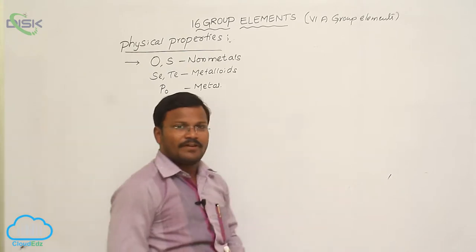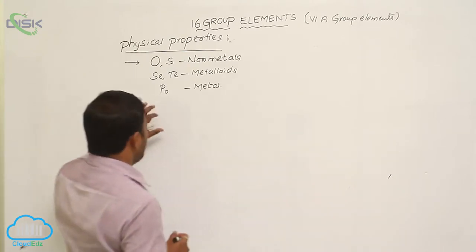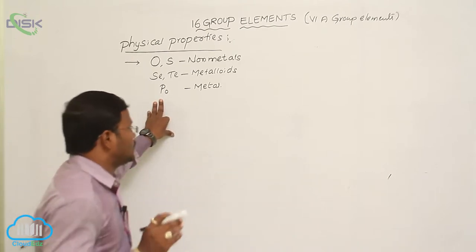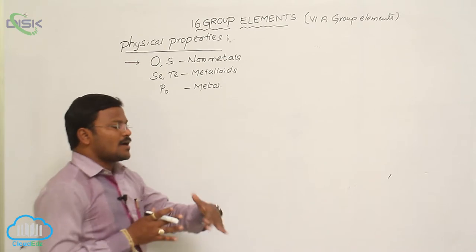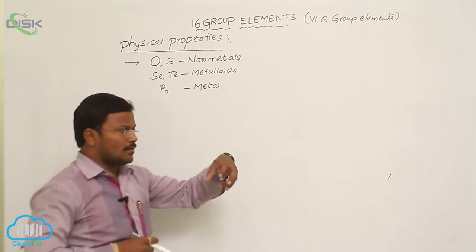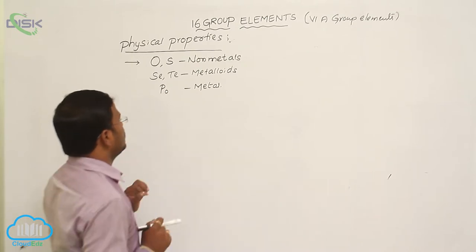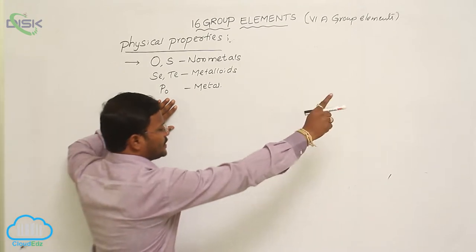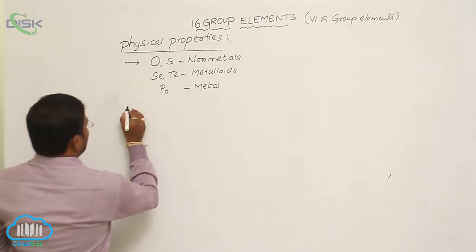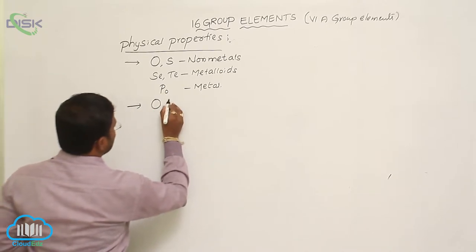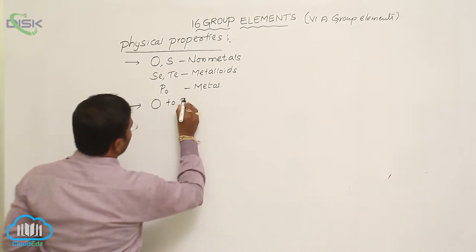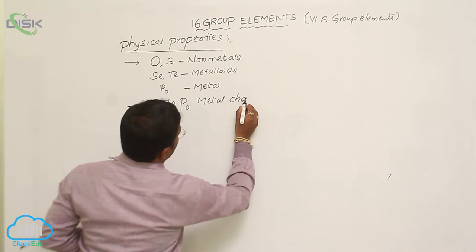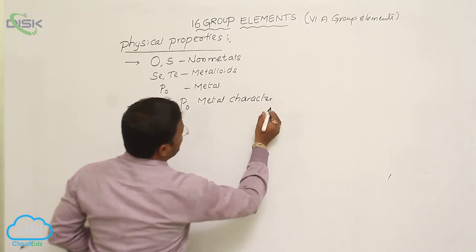Polonium is a radioactive element — it decomposes to produce smaller nuclei with a very short lifetime of nearly 13.8 days. From top to bottom, that is from oxygen to polonium, metal character increases.